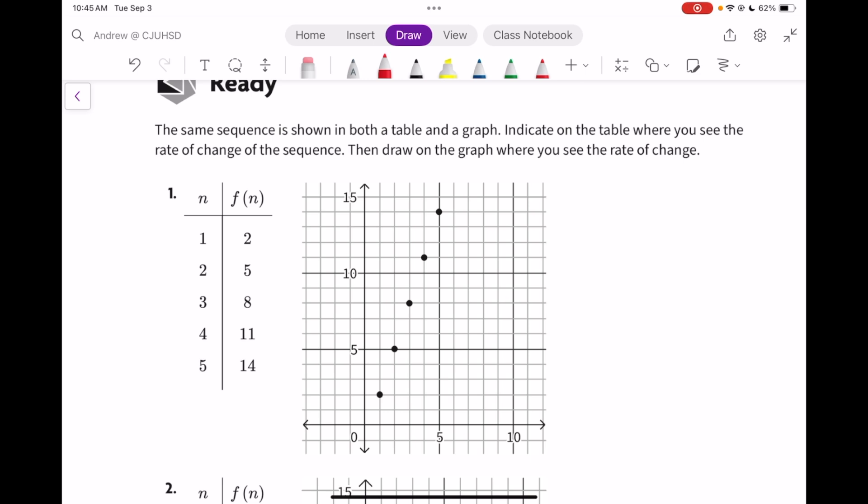On the graph, from point to point, we can see we're going up 3 and over 1. We continue doing that from point to point. That is the slope.